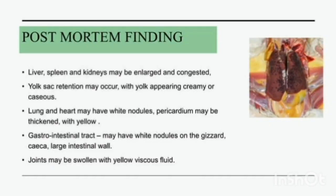Postmortem findings of this disease include enlarged and congested liver, spleen, and kidneys. Yolk sac retention may also occur with the yolk appearing creamy or caseous. Lungs and heart have white nodules, and the pericardium may be thickened with yellow fluid. The gizzard, cecum, and large intestine also have white nodules in this disease. Joints may be swollen with yellow viscous fluid.